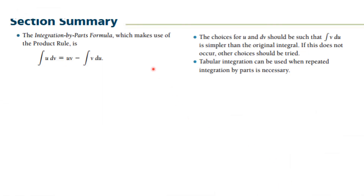Here's our summary of the section. We have a new formula that allows us to integrate many more things: the integral of u dv equals uv minus the integral of v du — commit this to memory. The choices for u and dv should be such that the integral of v du is simpler than the original integral; if not, try a different choice. Tabular integration can be used when repeated Integration by Parts is necessary.